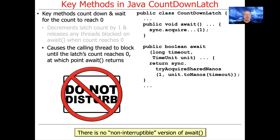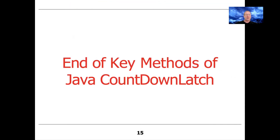Interestingly, there's no non-interruptible version of Await, unlike a semaphore or a reentrant lock. So you can only wait until the count reaches zero, the thread is interrupted, or in the timed version, the timeout elapses. These are very simple methods, and what makes them interesting is what they can be used for to solve real problems — and we'll look at that in the next part of this lesson.